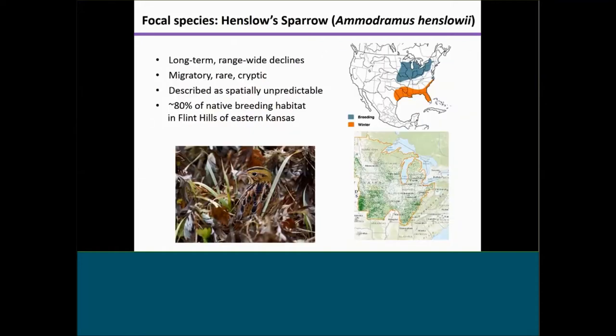Among the most at-risk species of grassland birds is the Henslow's sparrow. They've experienced long-term, range-wide declines attributed to habitat loss and fragmentation, and are currently recognized as the species of highest conservation priority in eastern and midwestern grasslands. They're migratory, very rare, and notoriously elusive. For the past century they've been described as spatially unpredictable, appearing and disappearing from prairies within and between breeding seasons. Most studies have focused on fine-scale habitat choices, and not much is known about how they respond to broader-scale landscape heterogeneity.